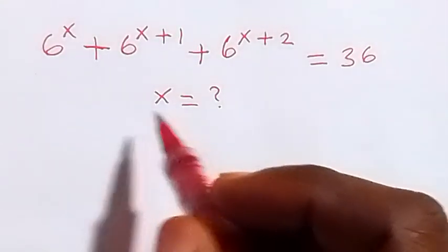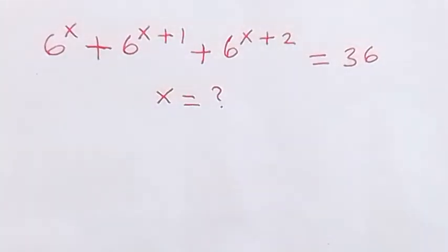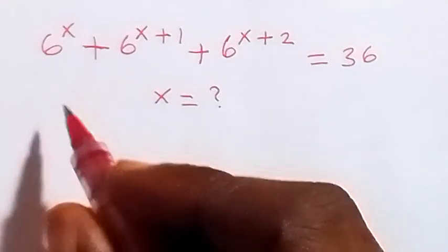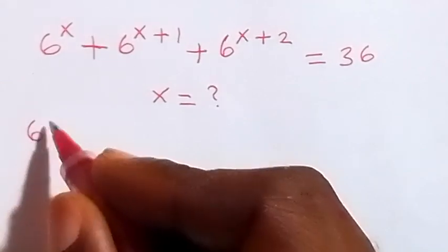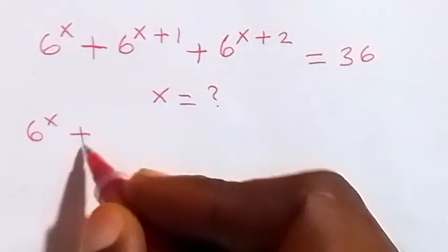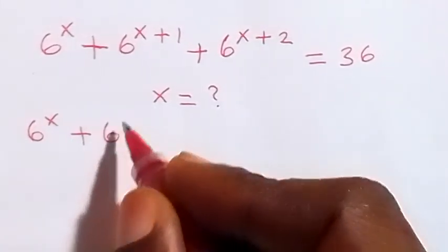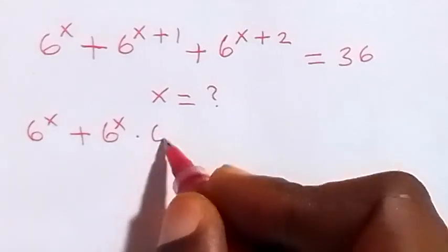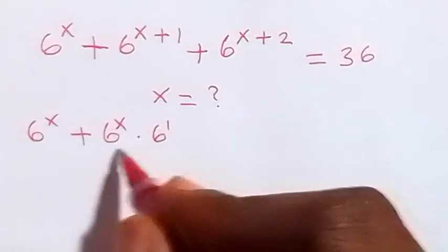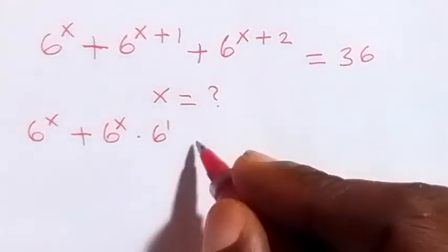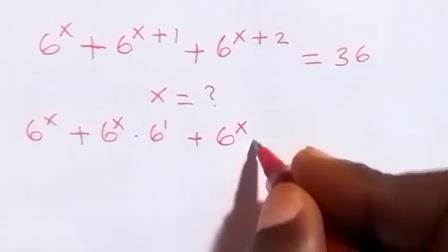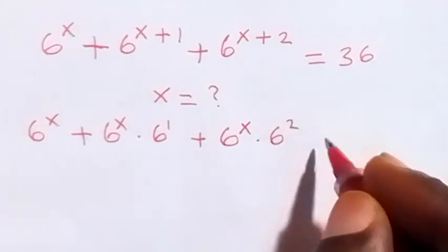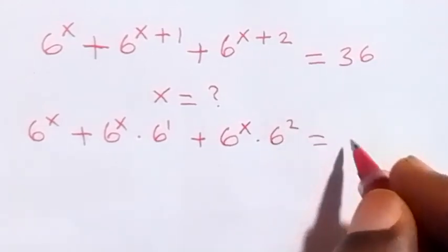Hello, you are welcome. How to find the value of x in this nice algebra equation. From here we can write this again as 6 raised to power x, plus 6 raised to power x times 6 raised to power 1, from the law of indices we separate this, then also plus 6 raised to power x times 6 raised to power 2, then equals to 36.